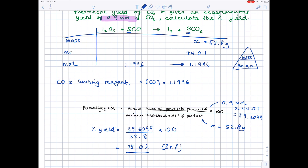That was pretty complicated. Hopefully you can see it's just using our table and triangle to work out missing values, which you then substitute back in. Please check out my limiting reagent video if you're unsure about what we just did, because that involved some pretty complicated maths.